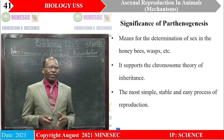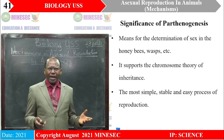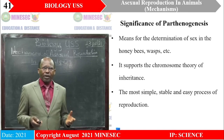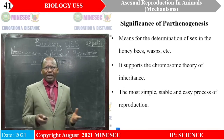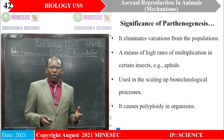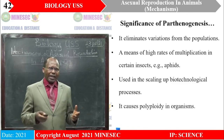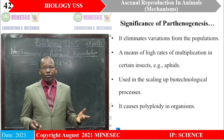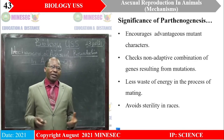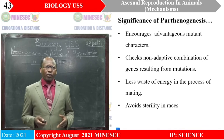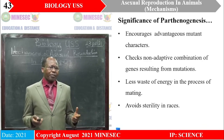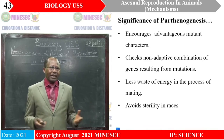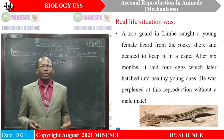What is the significance of parthenogenesis? It is a means for the determination of sex in honeybees and relates to the chromosome theory of inheritance. It is the most simple, stable, and easy process of reproduction. It eliminates various forms of population limitation and is a means of high rates of multiplication. This could be used in the production of microbes to produce vaccines or medicines for humans and animals. Also, there is less waste of energy in the process of mating, so within a short time many offspring are produced and there is no sterility — each individual will be able to produce young ones.